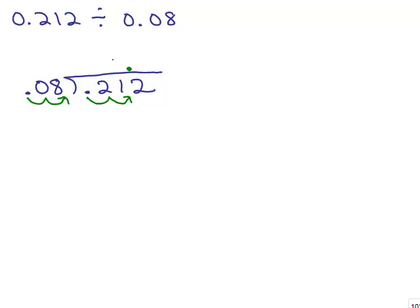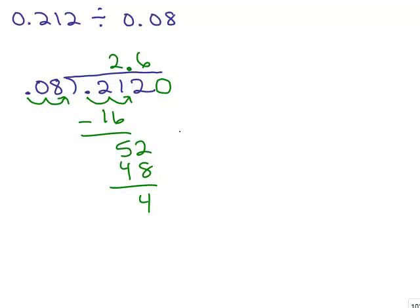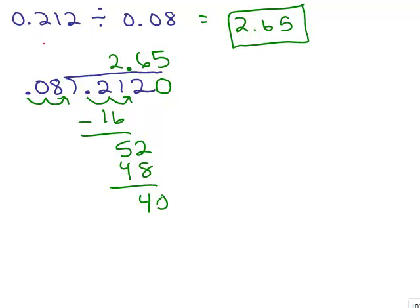Working through the shortcut: 8 into 21 goes twice. Bring down the 2. 8 goes into 52 six times. Then put another 0 and bring it down: 8 into 40 goes 5. Still the same answer: 2.65. Personally, it's easier when it's in the top fraction form — move your decimal points, then write the problem as 8 into 21.2, which is less messy. But either way, the answer is still 2.65.